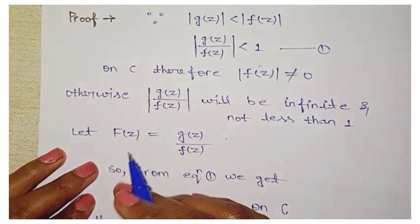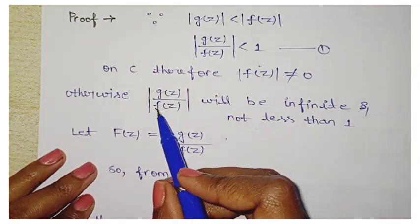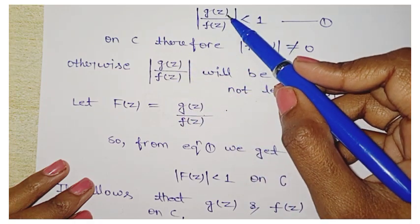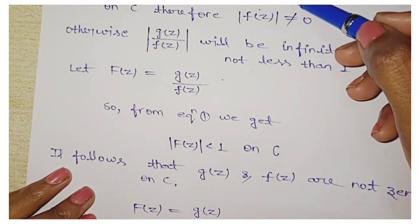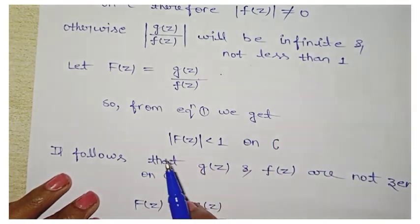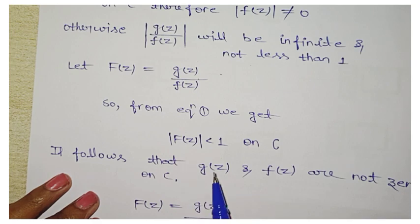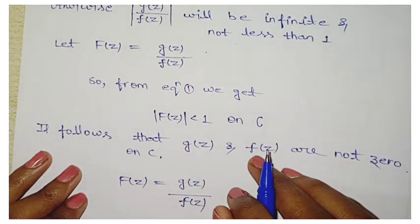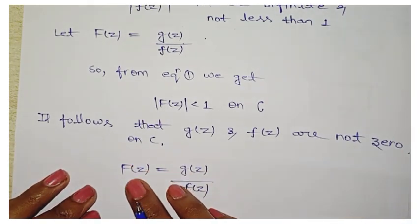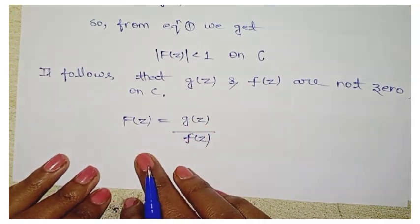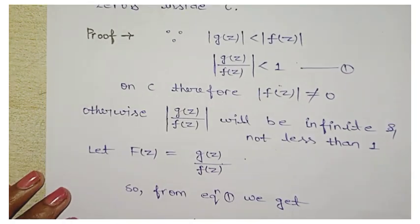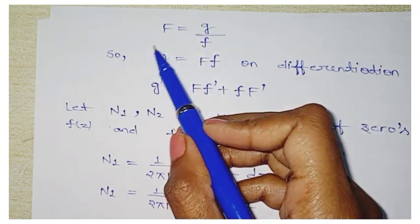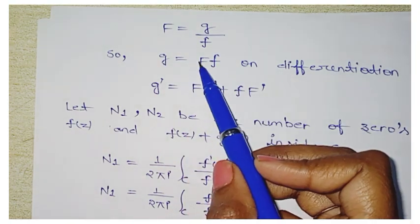To prove this, let us define capital F(z) = small g(z)/small f(z). From equation one, putting this value in, we get mod of F(z) < 1 on C. It follows that g(z) and f(z) are not zero on C. Now from F = g/f, by cross multiplication: small g = capital F · small f.